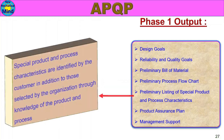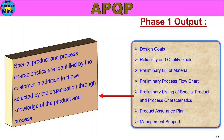Preliminary Listing of Special Product and Process Characteristics: special characteristics are identified by the customer in addition to those selected by the organization through knowledge of the product and process. Special characteristics are very important parameters — fitment-related, functional-related or safety-related. They are identified through customer drawings, symbols, and in-house process and product knowledge.